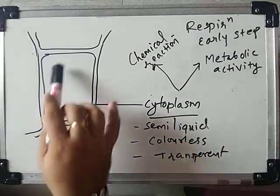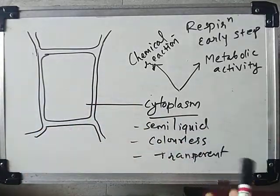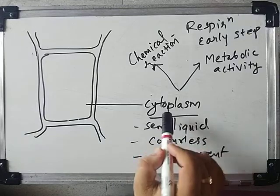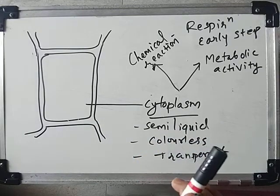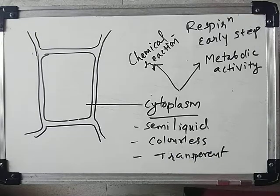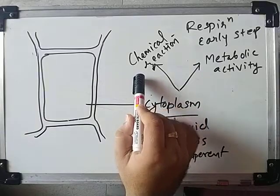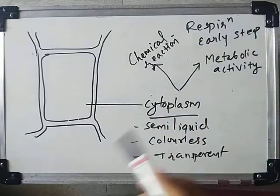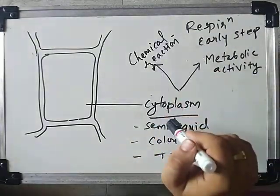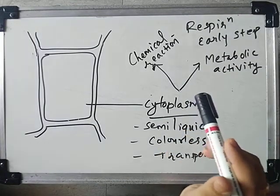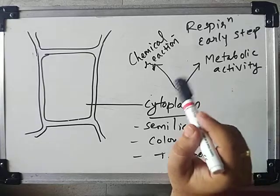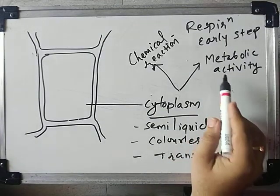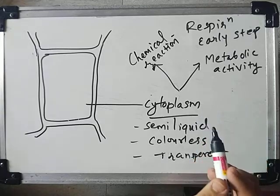The second very important part is cytoplasm — a watery, semi-liquid, colorless, and transparent fluid available throughout the whole cell. The organelles are embedded in the cytoplasm only. Cytoplasm majorly involves many different chemical reactions in the body. One of those reactions is respiration — the early step named glycolysis actually occurs in the cytoplasm, where pyruvic acid is formed. Many different metabolic activities are also regulated by the cytoplasm.